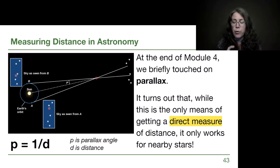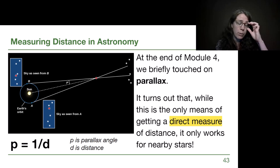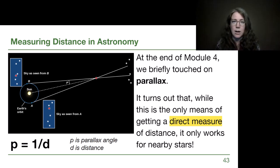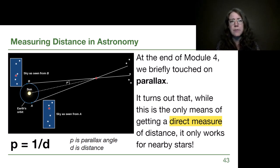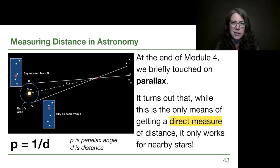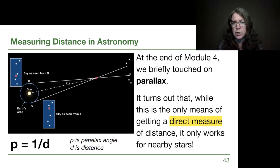If we think about everyday distance measurements — if we have a ruler and we can physically measure a piece of paper, that's a direct measurement. If instead we notice a car off in the distance and we guess at how far away it seems, that isn't a direct measurement if we don't know the size of the car.